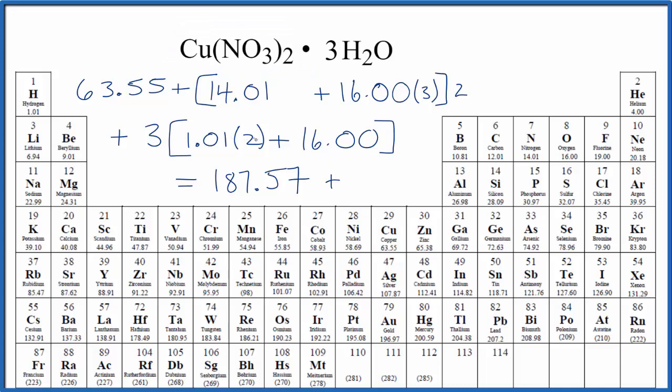For the water, we do the same thing. Two times 1.01 plus 16, we get that number multiplied by three. That gives us 54.06 grams per mole. Add these two numbers together: 241.63 and the units are grams per mole.